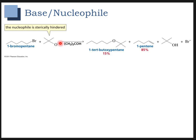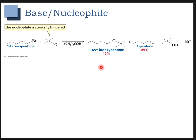If this were methoxide — just a methyl group — we'd see a lot of substitution and less elimination. But because it's so bulky, we don't see as much substitution and we see more elimination.